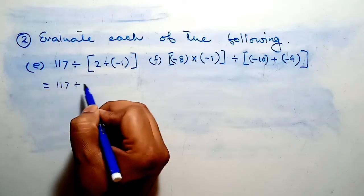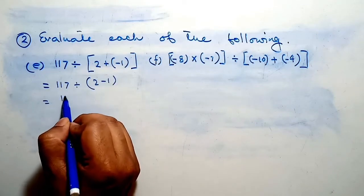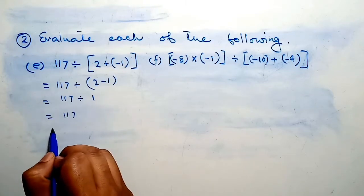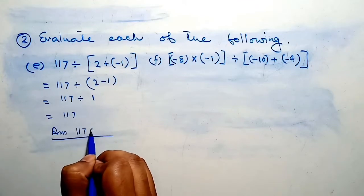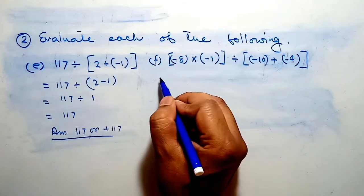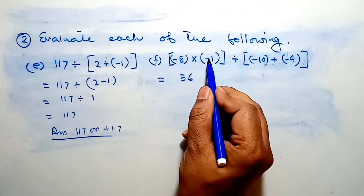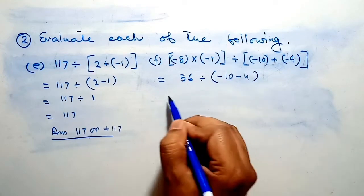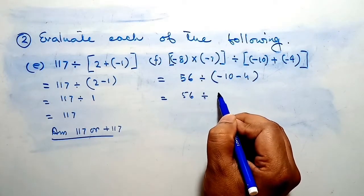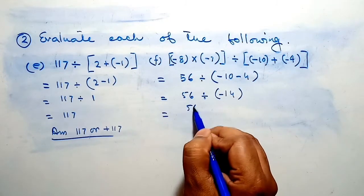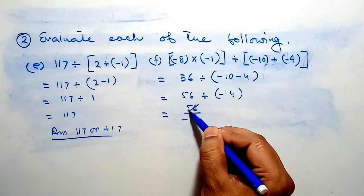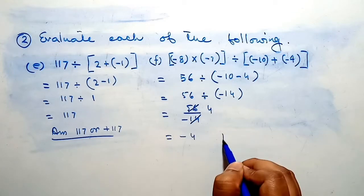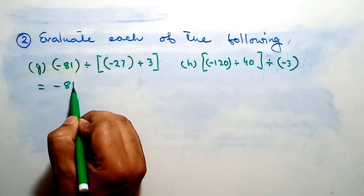117 divided by 2: plus and minus became minus, so 117 divided by plus 1 and the final answer is 117. Then 8 into 7 equals 56; minus and minus became plus. Divide minus 10: plus and minus became minus 4. So 56 divided by minus 14 — when we divide 56 by 14 we get 4 — so our answer is minus 4.